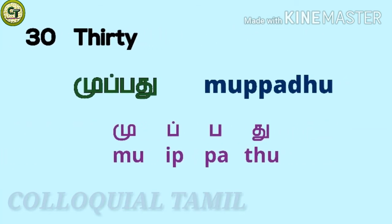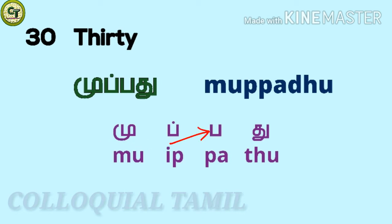For 30: 30. Mu — a short vowel letter; pa — a consonant; a short vowel letter; together: 30.